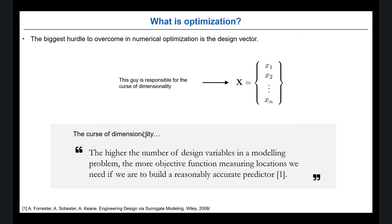I'm talking about the design vector and something called the curse of dimensionality. Basically, the more design variables you have, the more CFD simulations you need to do to construct a good predictor — because at the end of the day, that's what we want: a predictor to predict. This is the biggest challenge in numerical optimization. There are different techniques to overcome this, and we're going to have time to talk about adjoint optimization, which is another fantastic technique, but it's not always the solution.